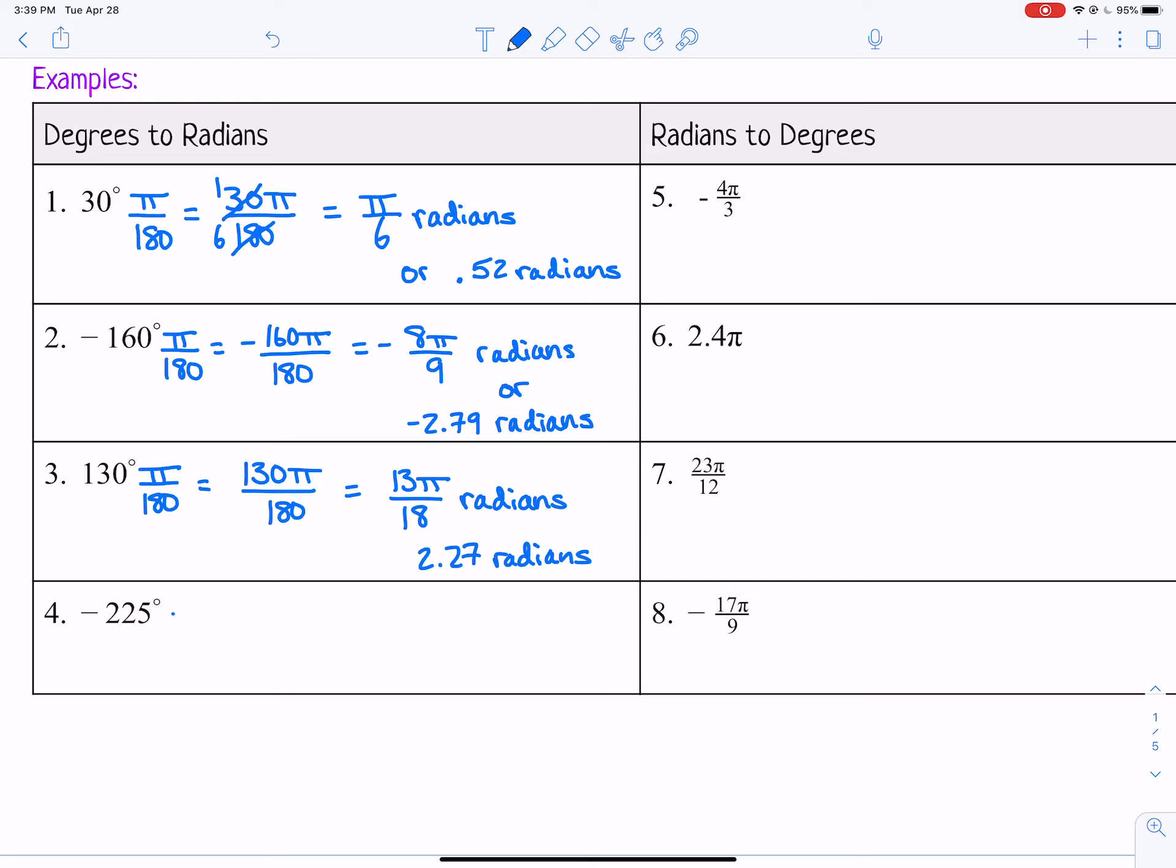And then negative 225 times pi over 180 would be negative 225 pi over 180. And then we could reduce it because 225 and 180 both divide by 45. So 225 divided by 45 would be negative 5 because it was a negative.